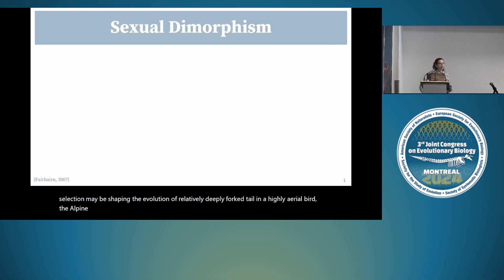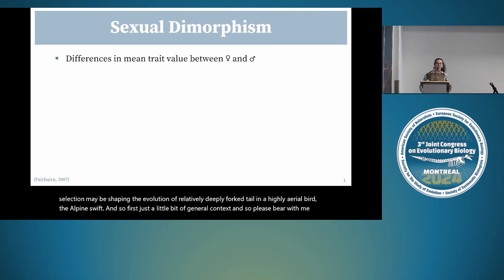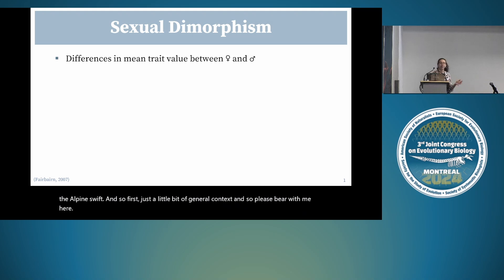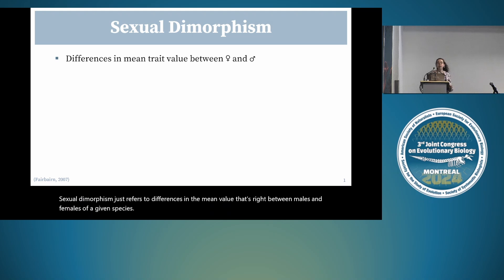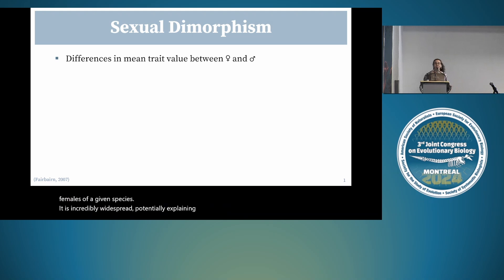Sexual dimorphism refers to differences in the mean value of a trait between males and females of a given species. It is incredibly widespread, potentially explaining why we're still so interested in it today.